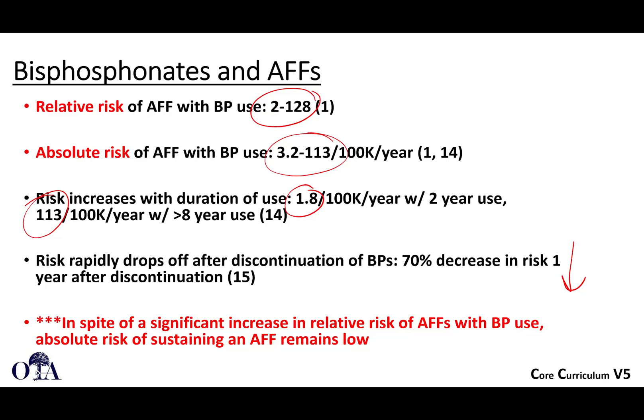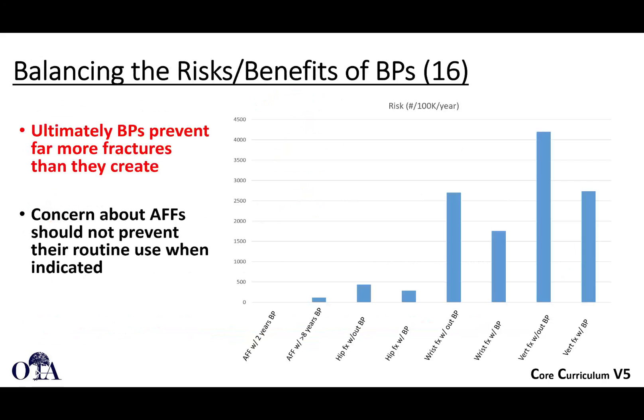In spite of a significant increase in relative risk of atypical femur fractures with bisphosphonate use, the absolute risk of getting these remains low. It's important to balance the risks and benefits: bisphosphonates on the whole prevent far more fractures than they create, and the absolute numbers of patients getting these is still fairly low. So it doesn't mean we should not use these medications — looking at the data, the risk of atypical femur fractures increases only modestly while the reduction in vertebral and other fractures is substantial.